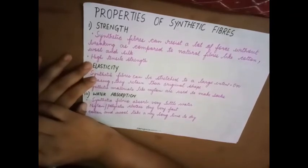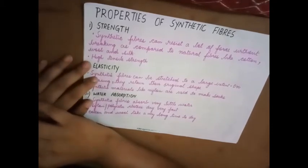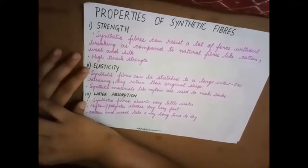Suppose when you try to break cotton, wool, or silk, it breaks easily. But whereas the nylon, the polyester, the rayon, it will not break that very easily.